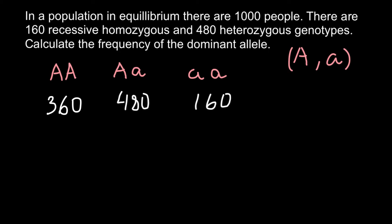This is the number of individuals. Now we have to find the number of alleles. For example, 360 people here each have two dominant alleles, so we have to multiply 360 by 2, and this is how we find the number of dominant alleles.